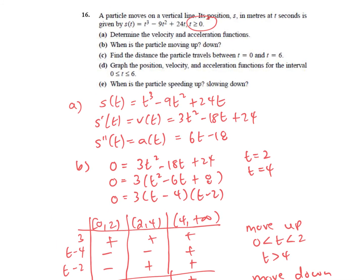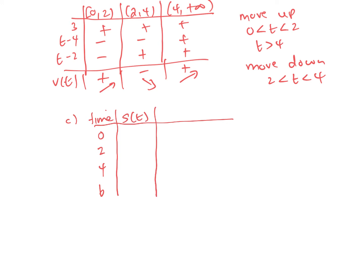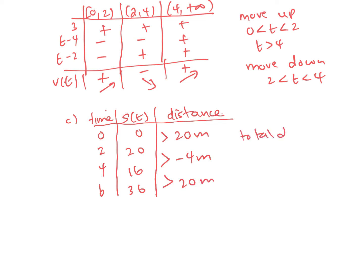Part C asks for the distance traveled between zero and six seconds. I'll make a table checking at t = 0, 2, 4, and 6, because I know it turns at two and four. Finding the displacement at those values: at zero it's 0, at two I get 20, at four I get 16, and at six I get 36. So the distance in the first two seconds was 20 meters forward, then it went backwards 4 meters, and then it went forward 20 meters. Taking the absolute value because distance is always positive, the total distance is 44 meters in those six seconds.